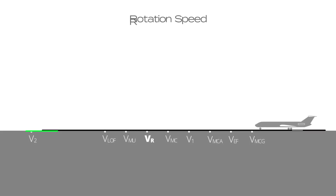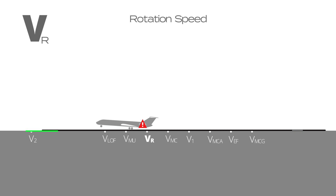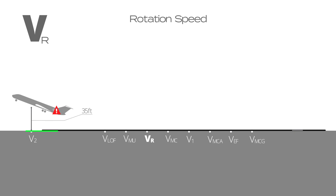Rotation speed is represented by VR. At this speed the rotation of the aircraft is initiated. The rotation speed ensures that in the event of an engine failure, lift off is possible and V2 is reached by a minimum of 35 feet above ground level. VR must be such that VLOF is greater than VMU. VR may not be less than V1 and 105% of VMC.